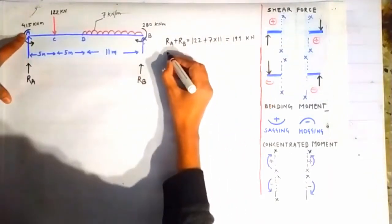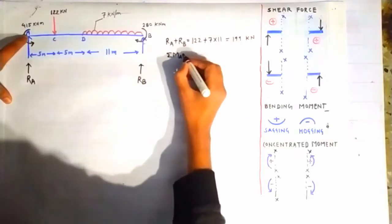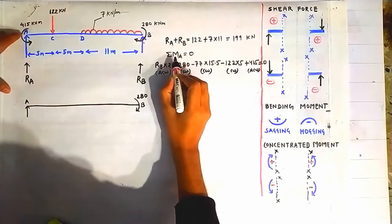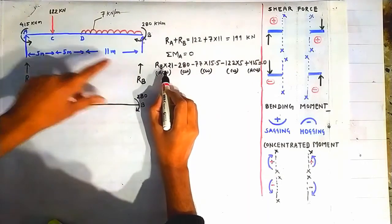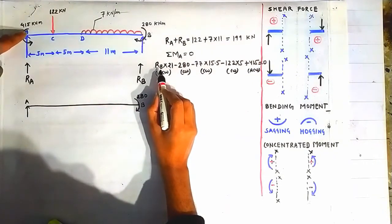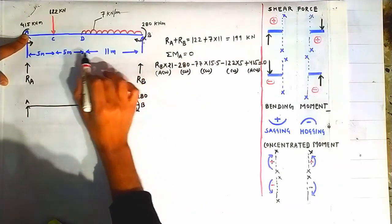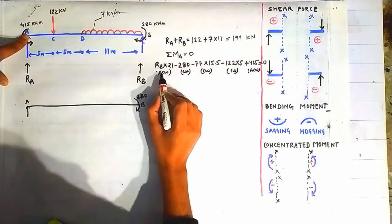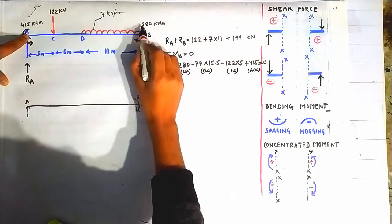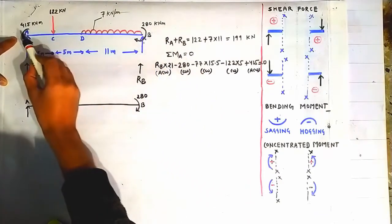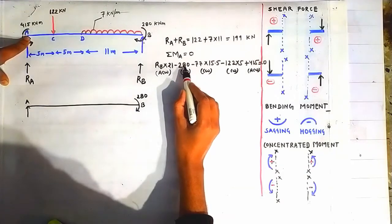The next step is taking the summation of all moments about point A, which is a hinge, equal to zero. RB is causing an anticlockwise rotation of beam AB about point A. So RB × (11 + 5 + 5) = RB × 21 gives the anticlockwise moment. The moment of 280 kN·m is trying to rotate beam AB in the clockwise direction about point A, so clockwise is taken as negative.